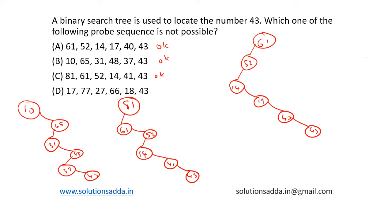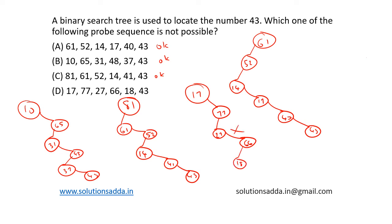Option D: we have 17. 17 is less than 43, so we should move to the right. We have 77. 77 is greater than 43, so we should move to the left. We have 27. 27 is less than 43, so we should move to the right. We have 66. 66 is greater than 43, so we should move to the right — but we are moving to the left here. This condition is violated, so option D is the correct answer as the impossible probe sequence.